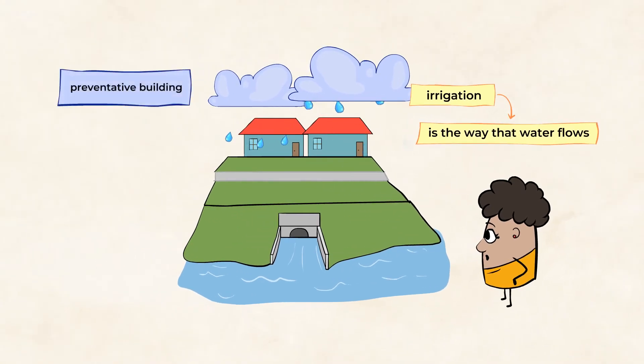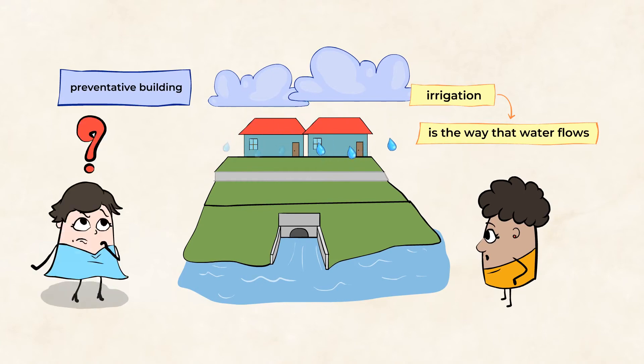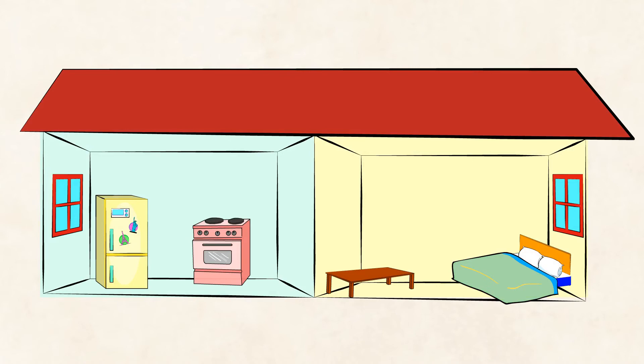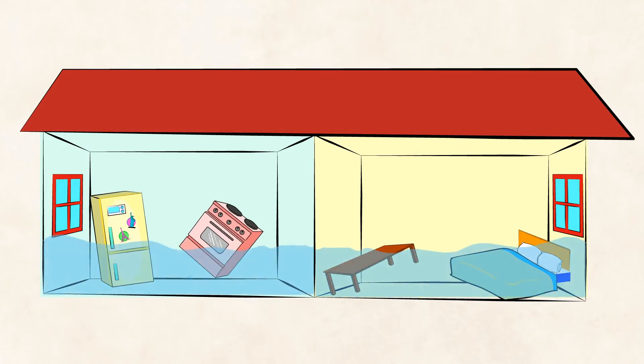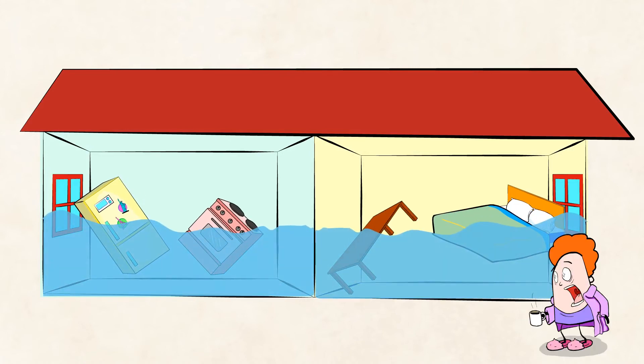Well, this is another type of preventative building. Why is it important to prevent flooding? Well, imagine if your kitchen and bedroom all of a sudden turned into a swimming pool. That might be fun for a minute or two.